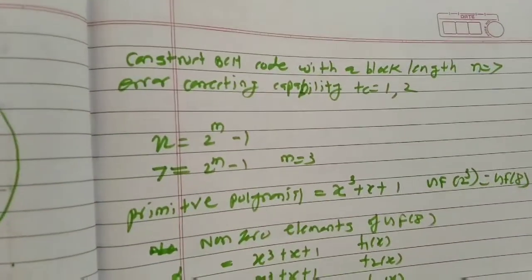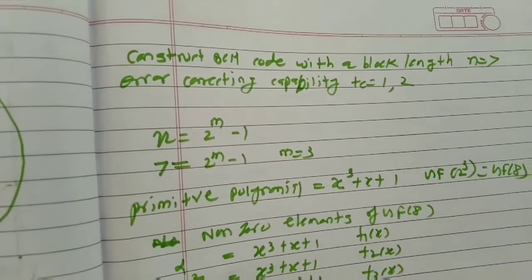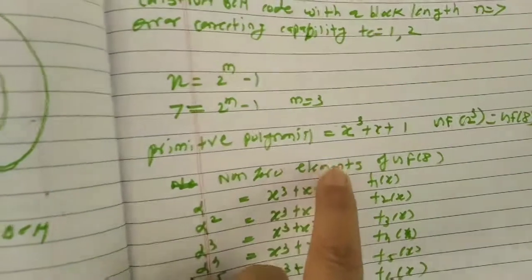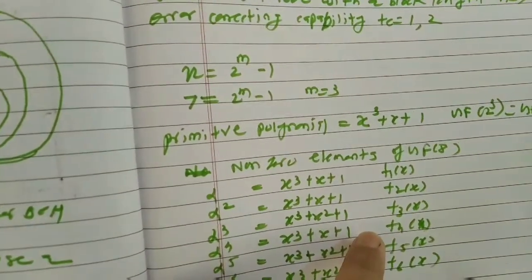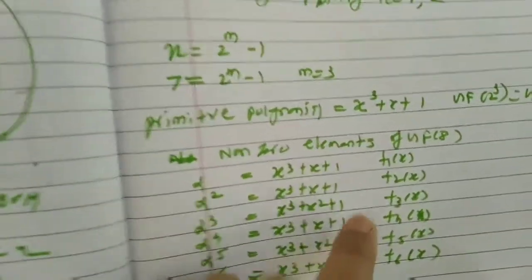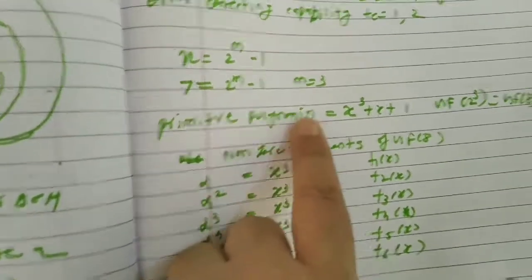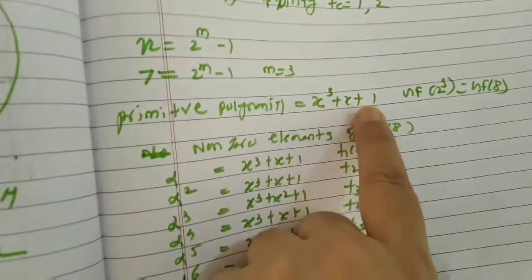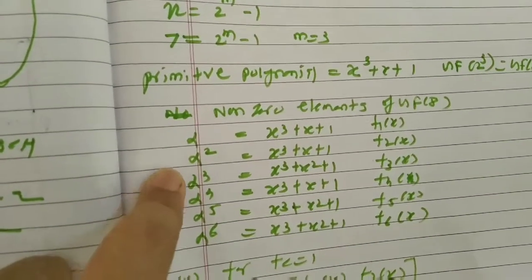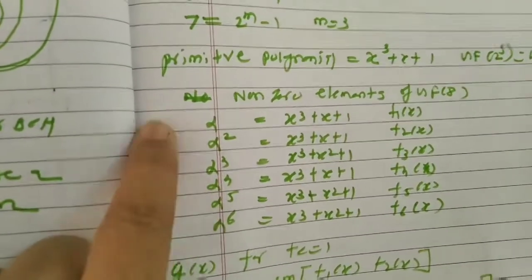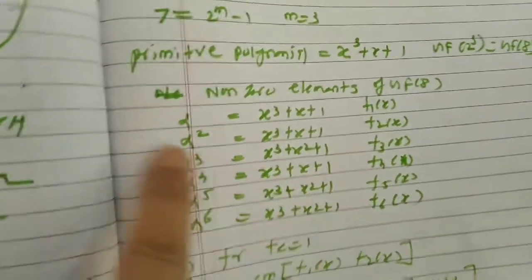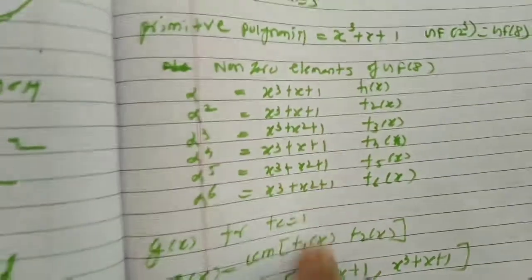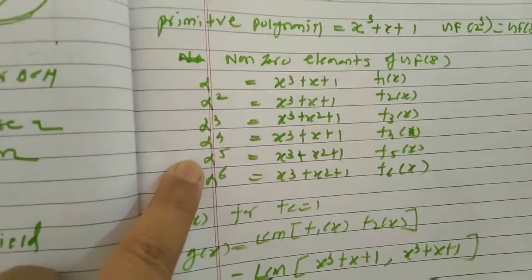Let us take one example. Here they have given block length n = 7 and TC = 1 and 2. First step: n = 2^m - 1, so m = 3. The primitive polynomial for GF(8) can be x³ + x + 1 or x³ + x² + 1 — I have selected x³ + x + 1. The Galois field elements are listed as non-zero elements in terms of primitive element powers, and these are the minimal polynomials corresponding to those elements, indicated as f1(x) through f6(x).